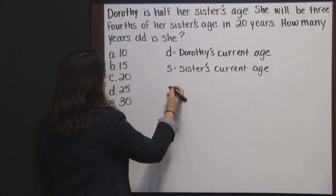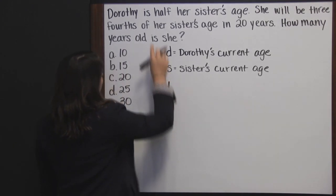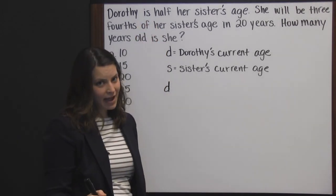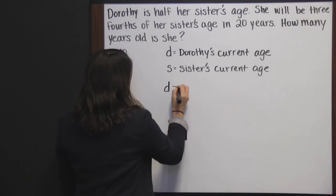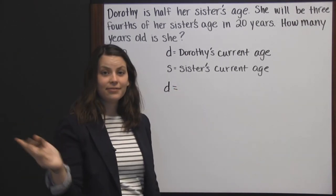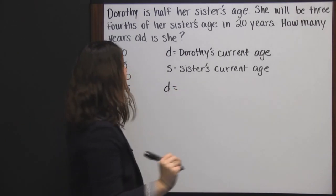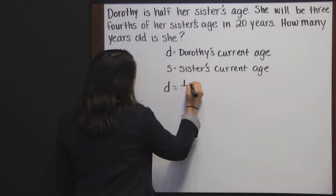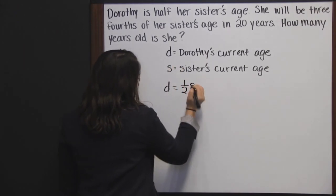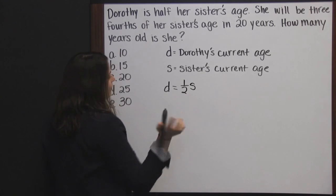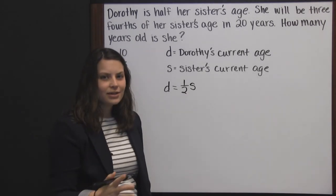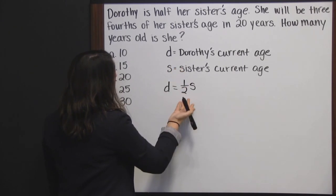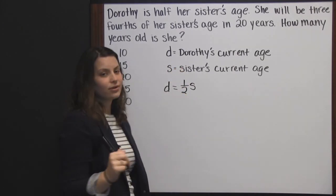So first we have that Dorothy is — and 'is' in math means equals. Dorothy equals half her sister's age, so half S. It's kind of like translating — you're translating from words into mathematical equations.